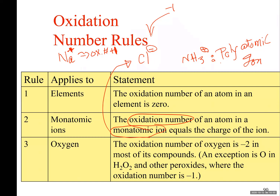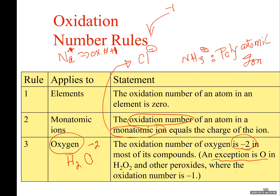Rule number three is about oxygen in a compound. For example, in H2O, this rule says when oxygen appears in a compound its oxidation number is negative two — in most cases. The exception is in peroxides, such as hydrogen peroxide, where two oxygen atoms are bonded together; in that case the oxidation number of oxygen is minus one.